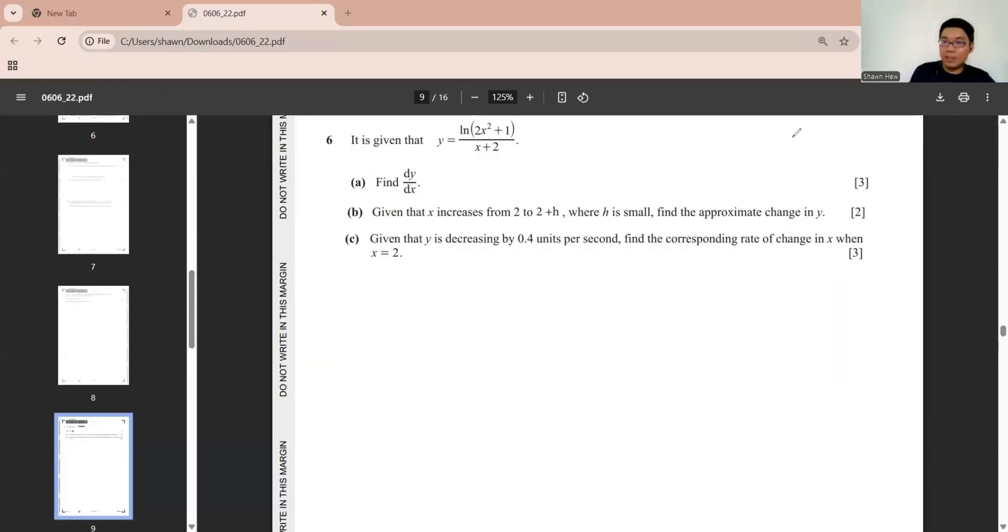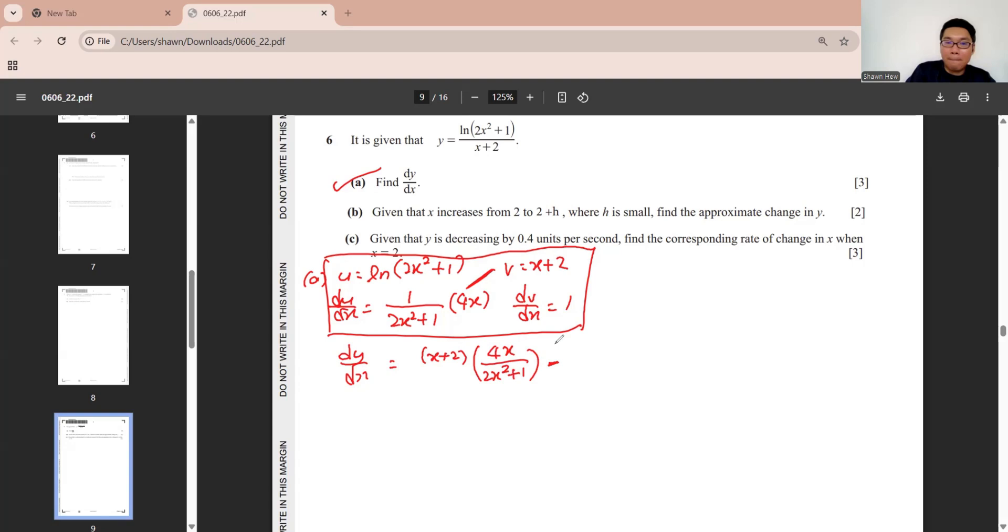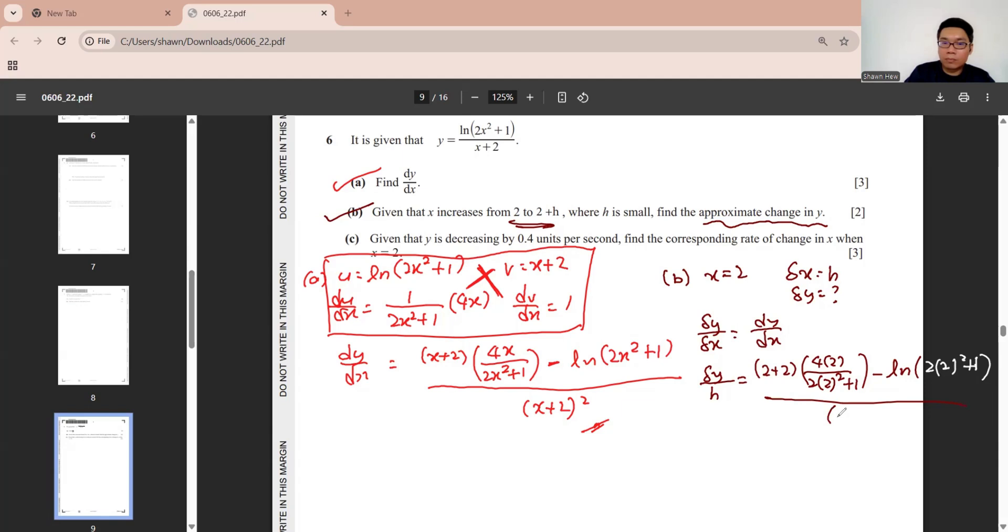Question 6 is a differentiation question. This is a quotient rule. Differentiate ln. Baby will throw down. And then differentiate the baby times it. After gather this 4 in 4. We can find dy/dx. This times this minus this times this divided by v squared. Done. Part b. Given that x increased from this to this. So we know that x is 2. Small change of x is h. Ask you to find approximate change in y. Means small changes of y is 1. So we substitute x in dy/dx. The h show there. Then we get these 2 marks.